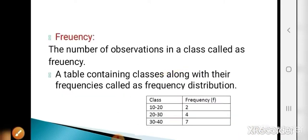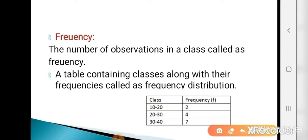Now the next is frequency. The number of observations in a class is called frequency. For example, classes 10 to 20, 20 to 30, 30 to 40 with frequencies 2, 4, 7. There are 2 observations in class 10 to 20, 4 observations in class 20 to 30, and 7 observations in class 30 to 40.